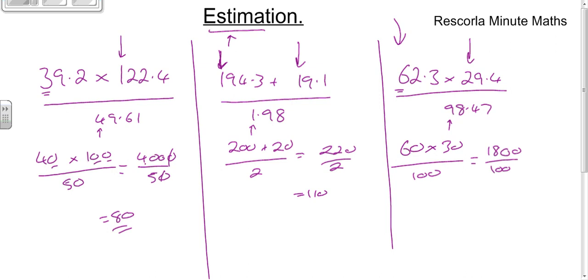If you've got a fraction like this, you can knock off a zero on the top and the bottom, then knock off another zero on the top and bottom, so that's 18 divided by 1, which is 18. Well done if you got that.